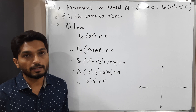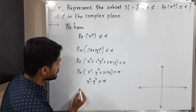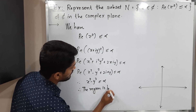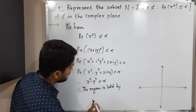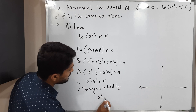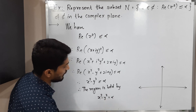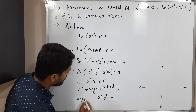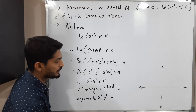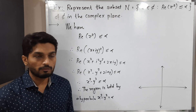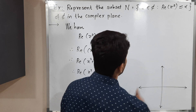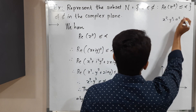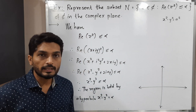To find the exact boundary curve, we replace the inequality by equality. So the region is bounded by x² minus y² equals alpha. This is the equation of a hyperbola. The standard equation of a hyperbola is x² minus y² equals a squared.